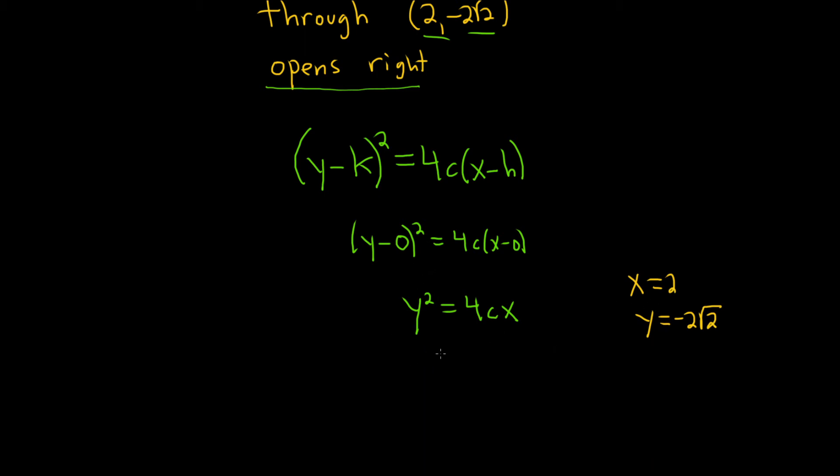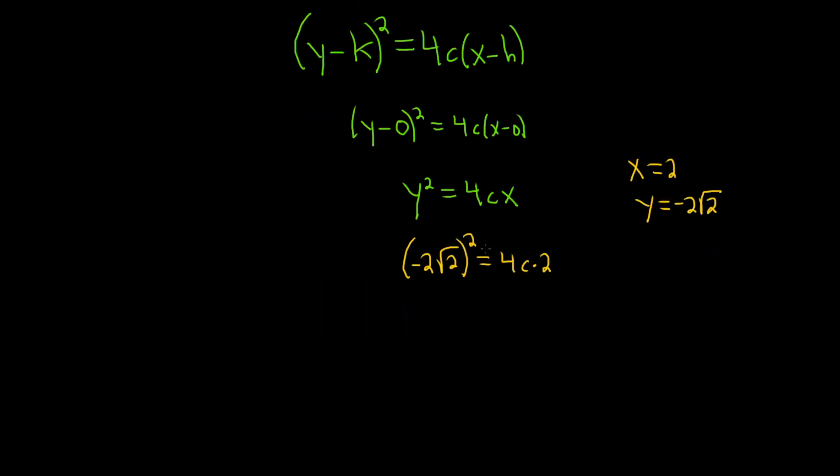So we have (-2√2)² = 4c(2). Properties of exponents say that you square each of these factors. We square the -2 and that gives us 4. When we square the √2, that gives us 2. And here we have 4 times 2, which is 8. So we have 8 = 8c.